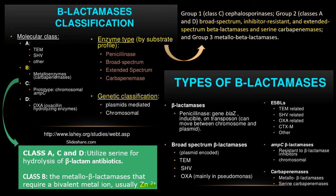Inhibitor-resistant means that if the enzyme is chromosomally mediated, then inhibitors like clavulanic acid cannot act on the enzyme — the enzyme cannot be inhibited by such agents. That is the meaning of inhibitor-resistant.